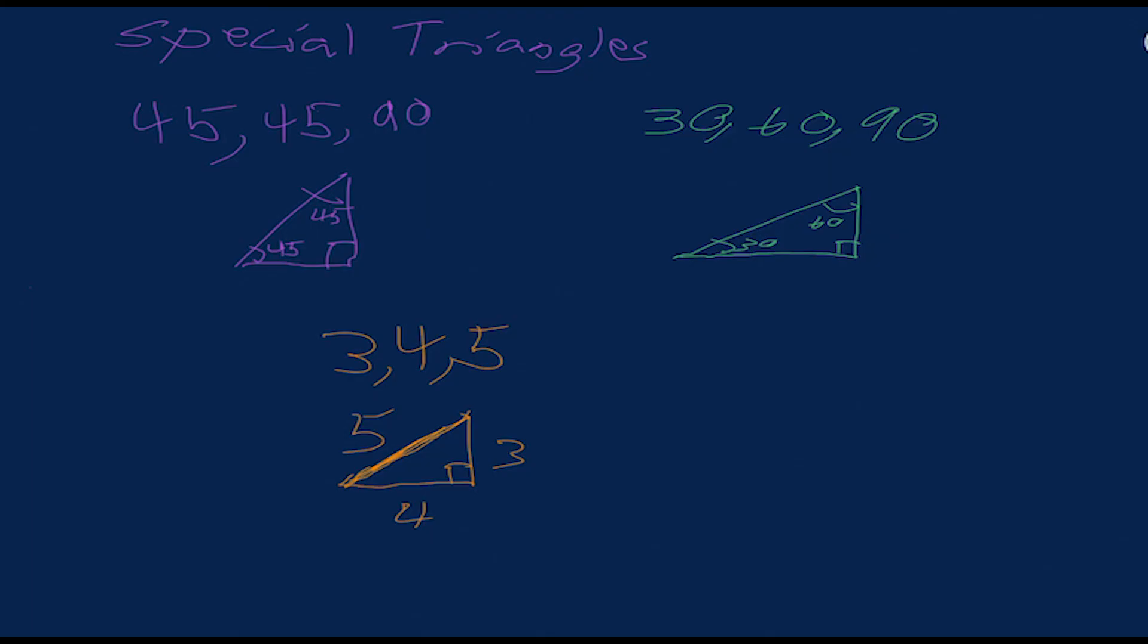In your 45-45-90 right triangle, you have side lengths of 1, 1, and square root 2. Now, remember, these are just proportions. So in a triangle that had side lengths of 2, 2, and 2 root 2, that would also be a 45-45-90 right triangle. For our 30-60-90 right triangle, we have side lengths of 1, 2, and square root 3. Again, we're dealing with proportions here. So you could have a small leg of length 2, a hypotenuse of length 4, and a long leg of length 2 root 3, and that would also be a 30-60-90 right triangle. And finally, we have a 3-4-5 right triangle, where the two legs are of lengths 3 and 4, and the hypotenuse is of length 5.